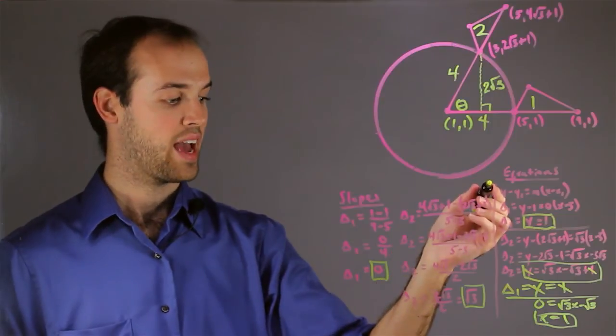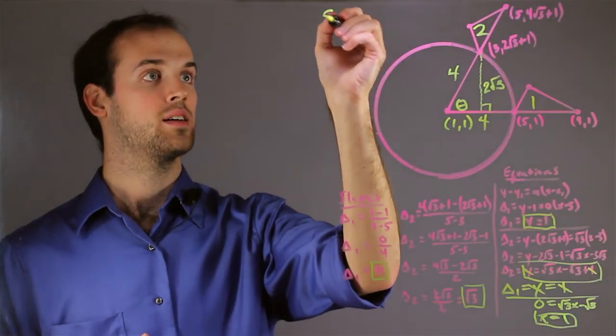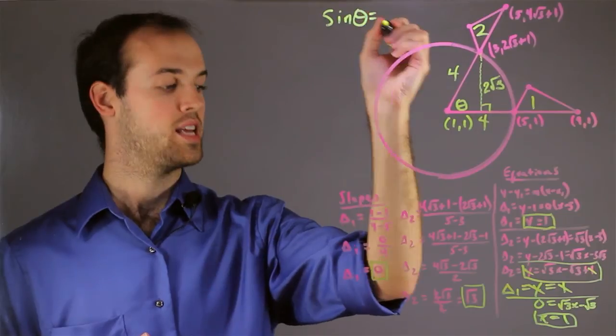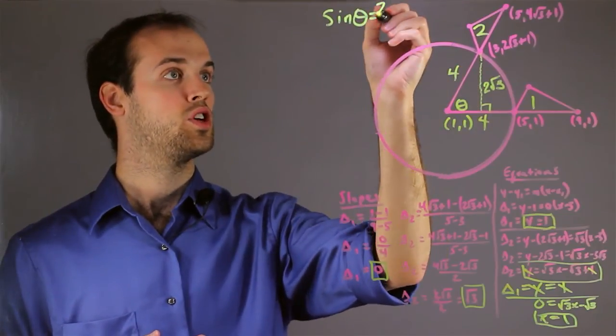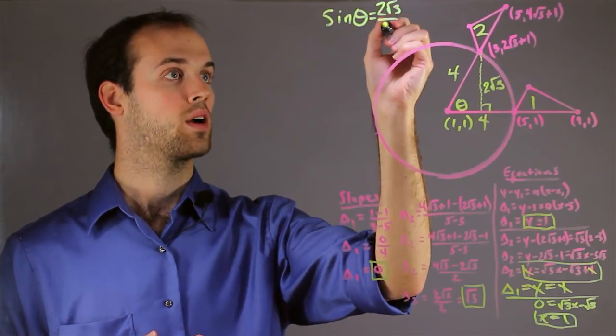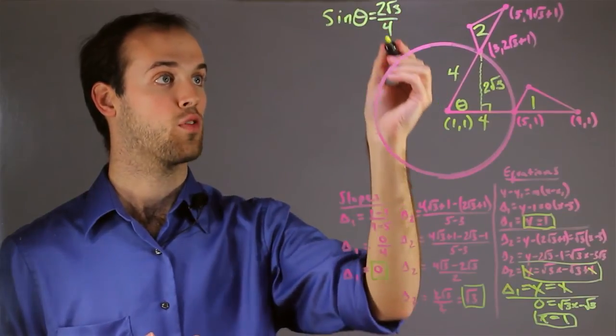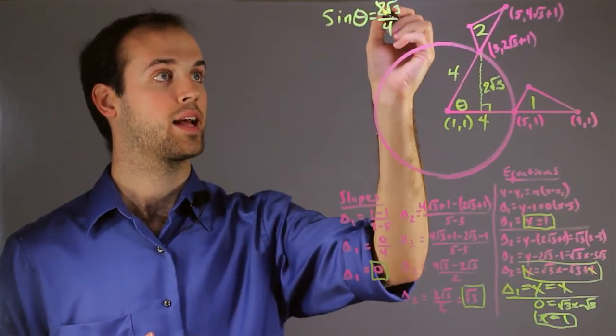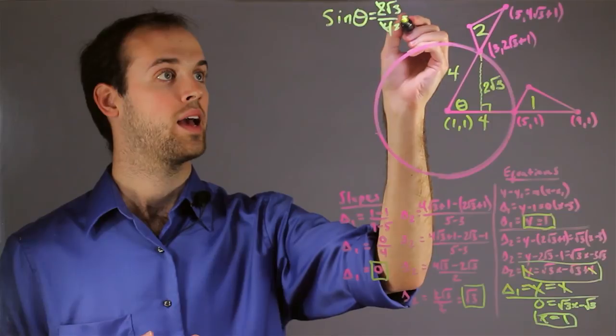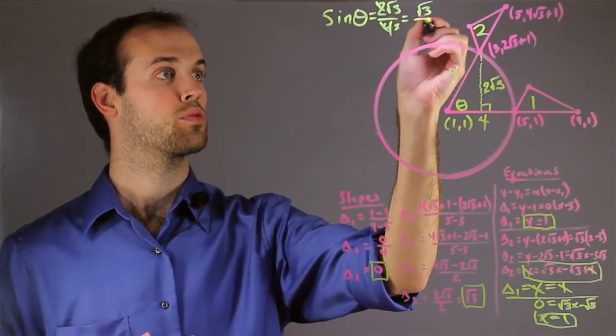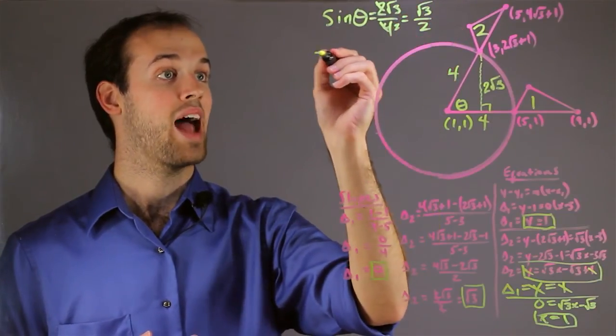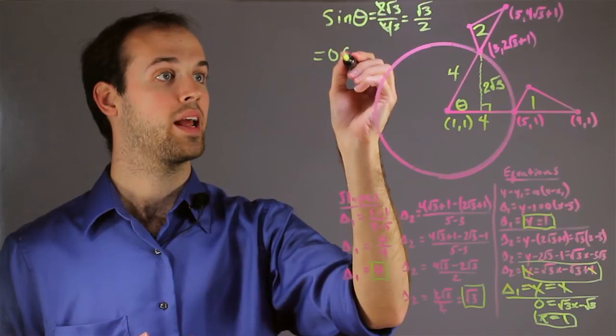So I would say that the sine of theta is equal to 2 root 3 over 4, which is the opposite side over the hypotenuse. I'm going to cancel out this 2, and I'm left with sine equals root 3 over 2, and that equals approximately 0.866.